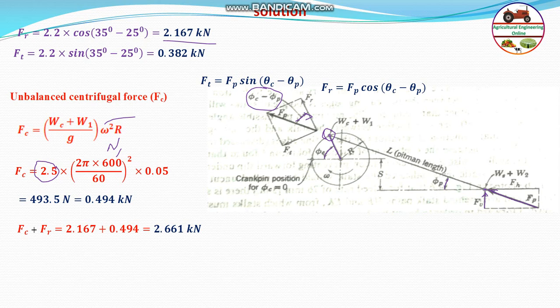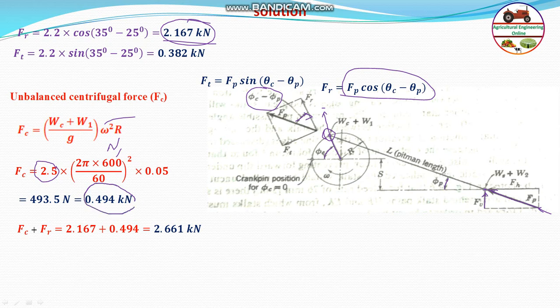Once we have the centrifugal force, we can find the total force along the radius. Due to the centrifugal force acting radially, and the radial component from the pitman force F_r = F_p × cos(theta_c minus theta_p), we add these together. The total force at the crank pin along the radius equals F_c plus F_r: 0.494 + 2.167 = 2.661 kN.